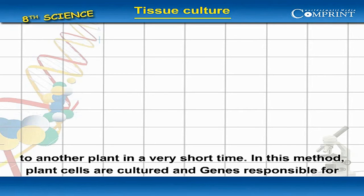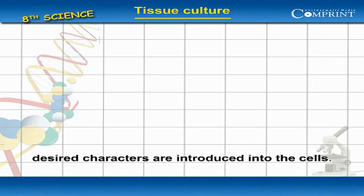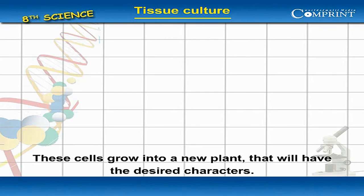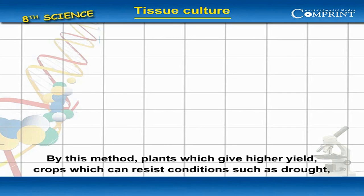In this method, plant cells are cultured and genes responsible for desired characters are introduced into the cells. These cells grow into a new plant that will have the desired characters.